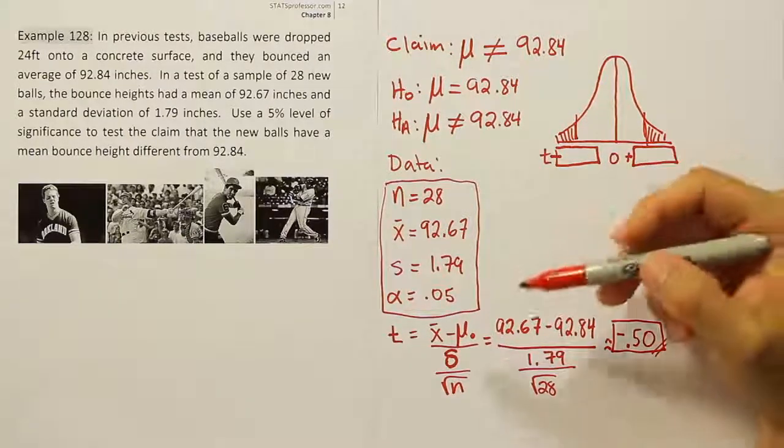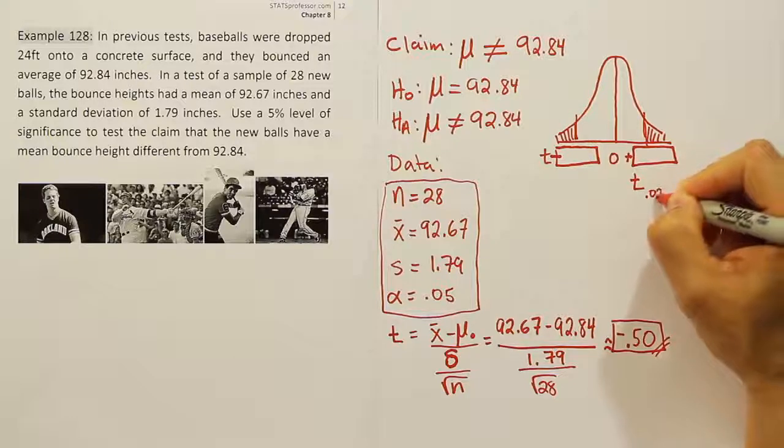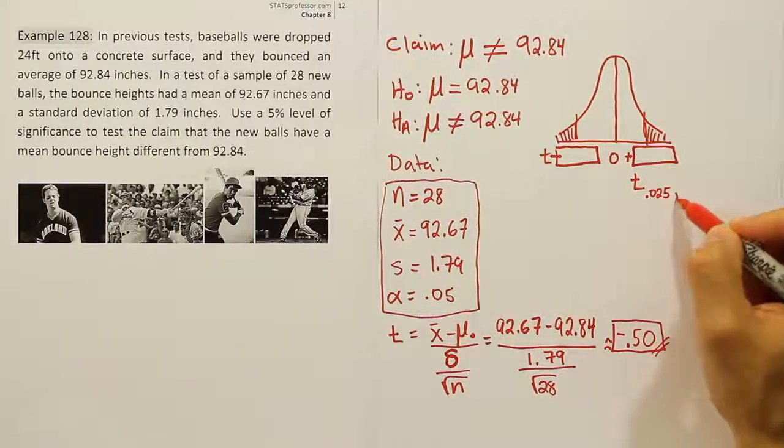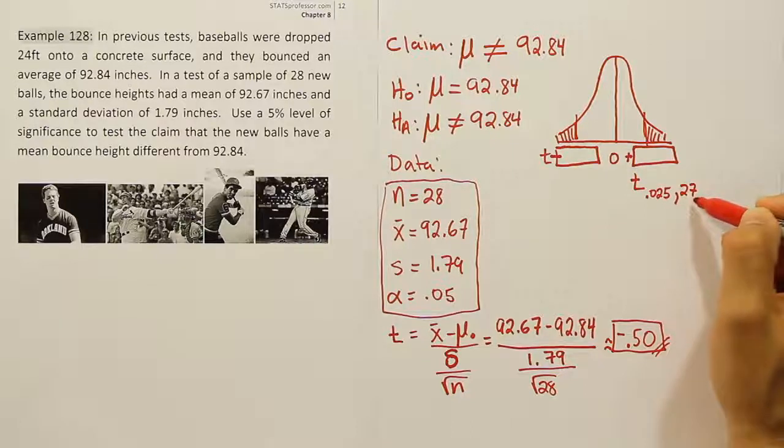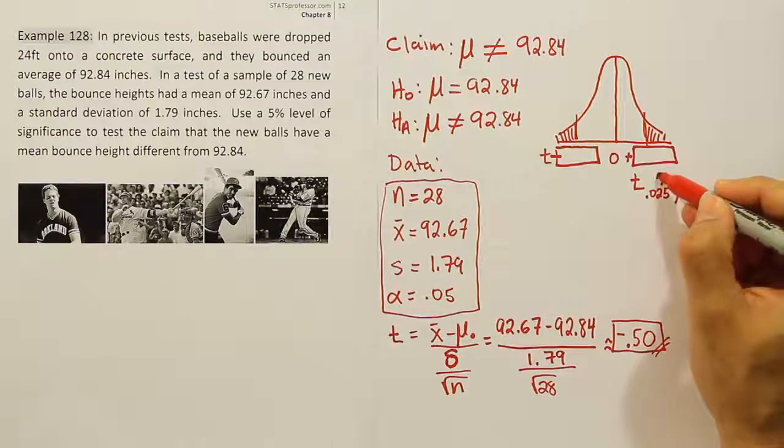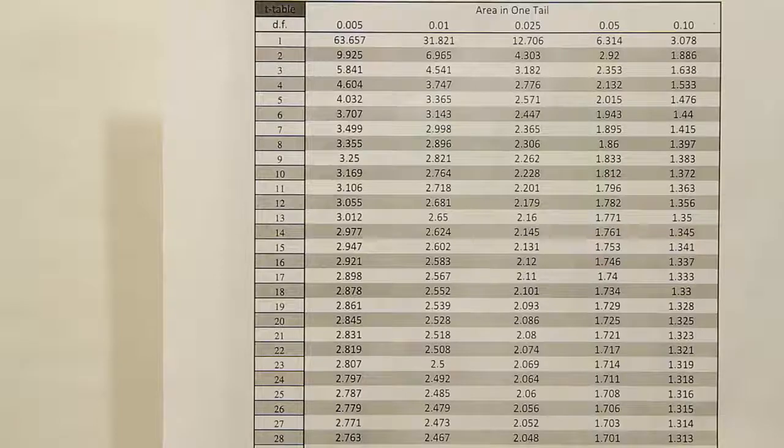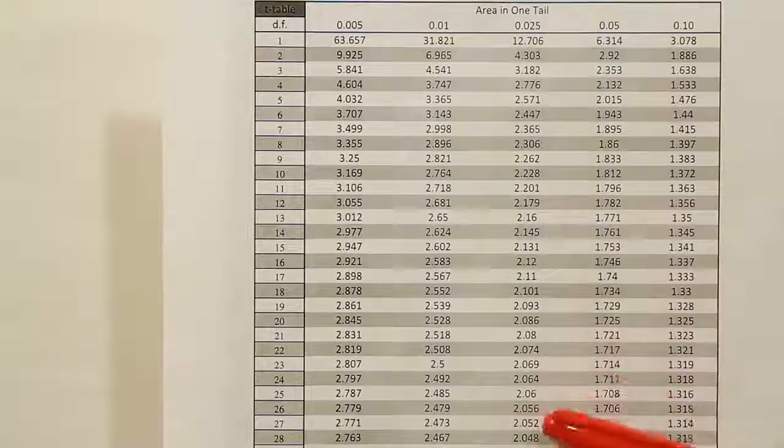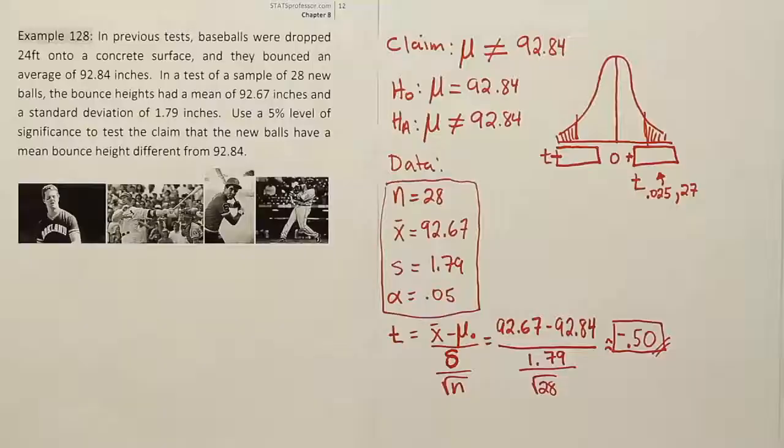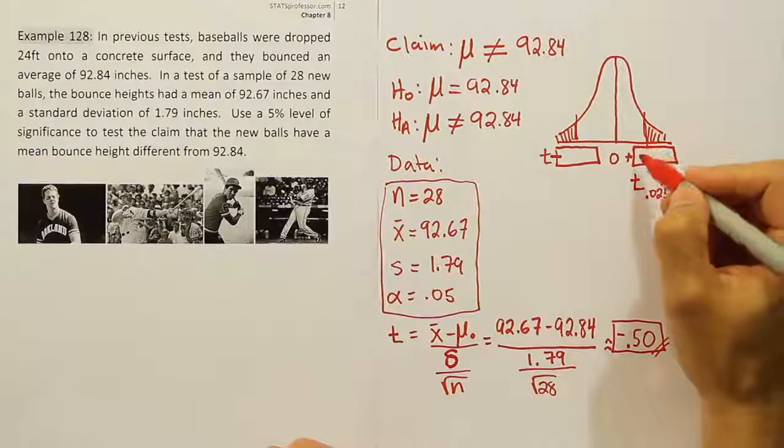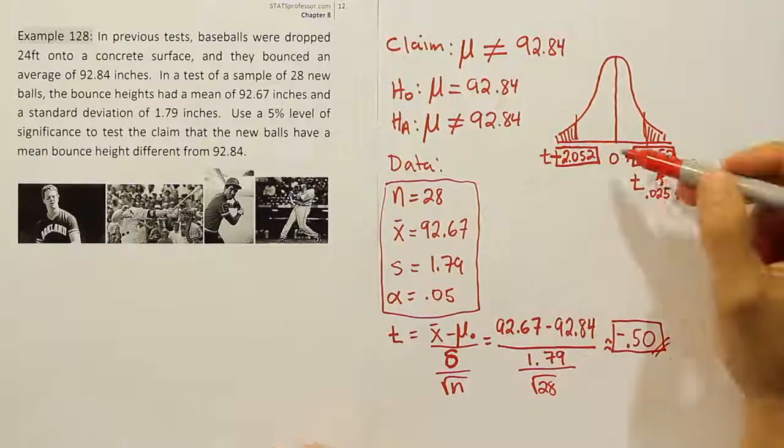If we go to our table, we're going to be looking up 0.05, but in two tails. So we're actually going to be doing t₀.₀₂₅, that's half of 5% in each tail, with degrees of freedom for this problem of 27. Let's look up 0.025 in one tail with 27 degrees of freedom. We find the answer to be 2.052. So we have positive 2.052 and negative 2.052. Those are our critical values.